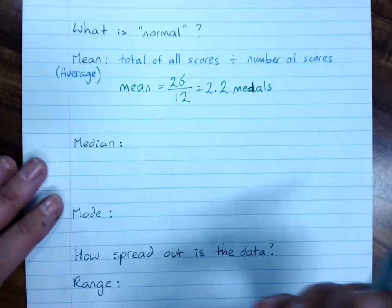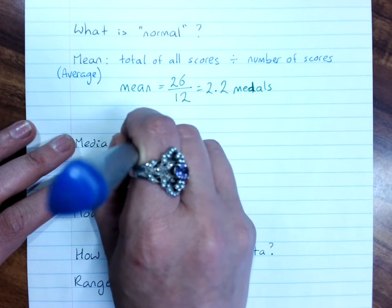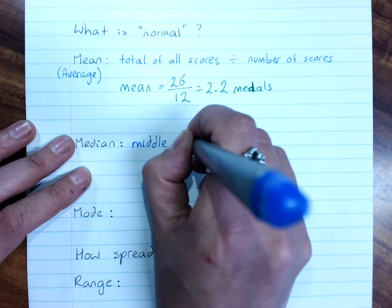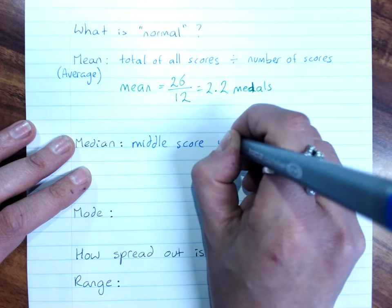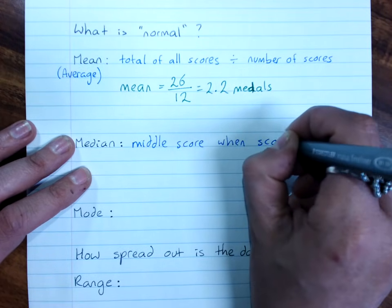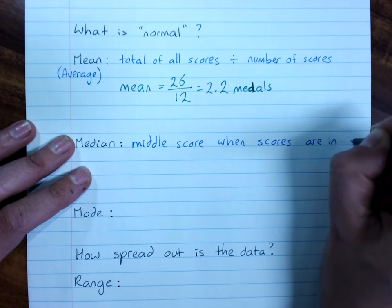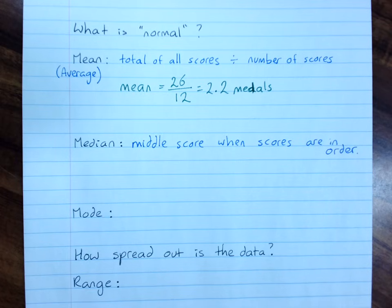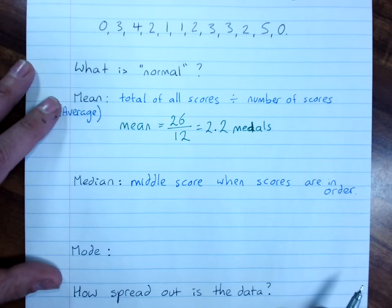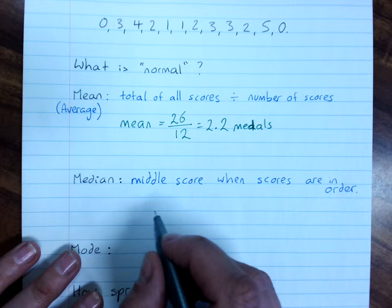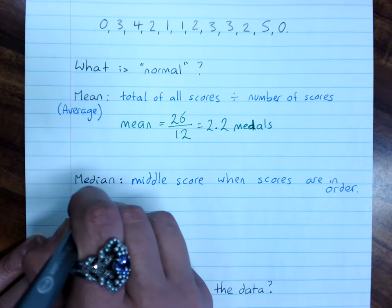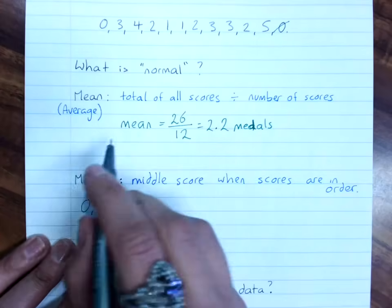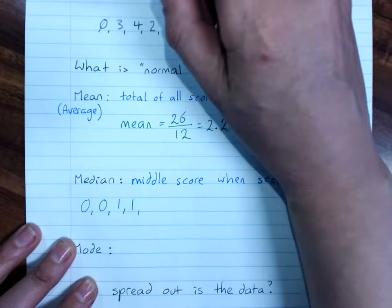The median is the middle score when all the scores are in order. And to get the median, that means that we have to put all my data in order. So we start with the smallest. And it can be a good idea to check those off as we do them.